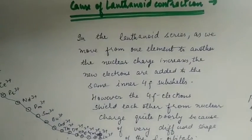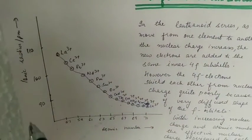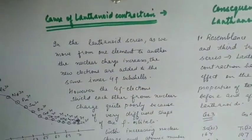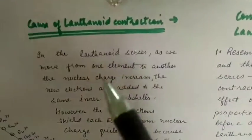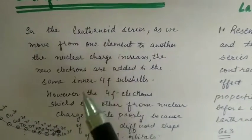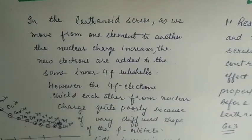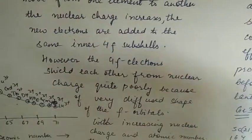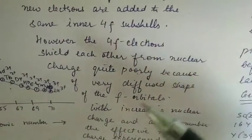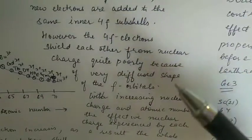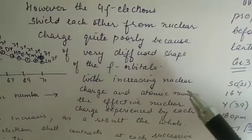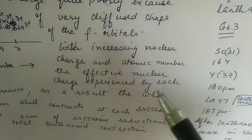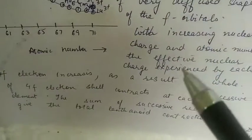The cause of lanthanoid contraction - this is a graph of ionic radius versus atomic number. You can see that there is a steady decrease. The reason is, as we move from one element to another, nuclear charge increases. New electrons are added to the same inner 4f subshells, but the 4f electrons do not shield the nuclear charge as well. Because their shape is very diffused, they do not shield the nuclear charge. So nuclear charge increases, atomic number increases, and effective nuclear charge also increases because the shielding effect is poor.